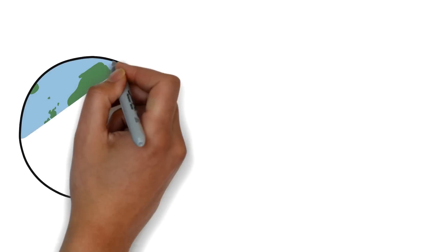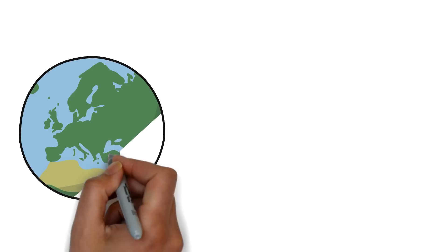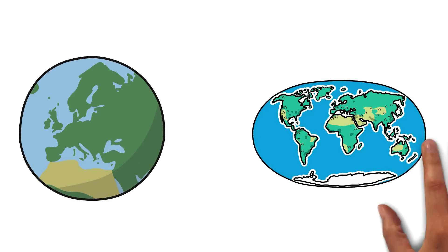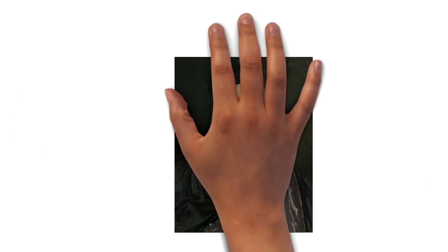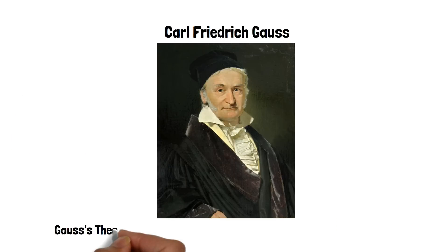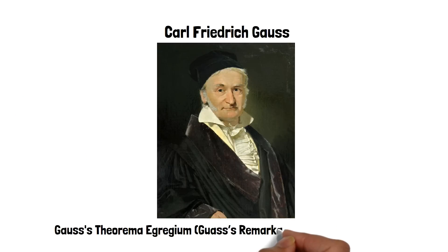Map projections are basically a representation of the 3D globe of the earth onto a flat surface. The earth is a sphere and maps are flat. It is impossible to display a sphere on a flat rectangular surface without any distortion to its size, shape, or distances, and this was proved mathematically by the German scientist Carl Friedrich Gauss.